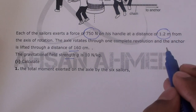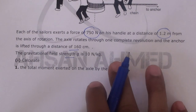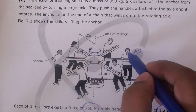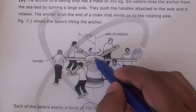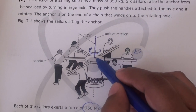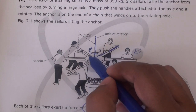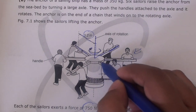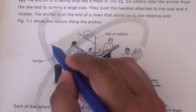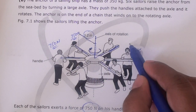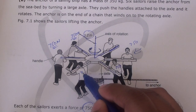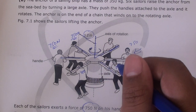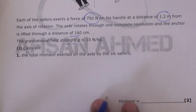Looking at the diagram, every person is applying their force on their own handle. Every person is applying 750 newtons. This point here is the axis, and each handle is 1.2 meters away from the center. So each sailor applies their force at 1.2 meters distance on their own handle, and all of them are applying 750 newtons at that same distance.